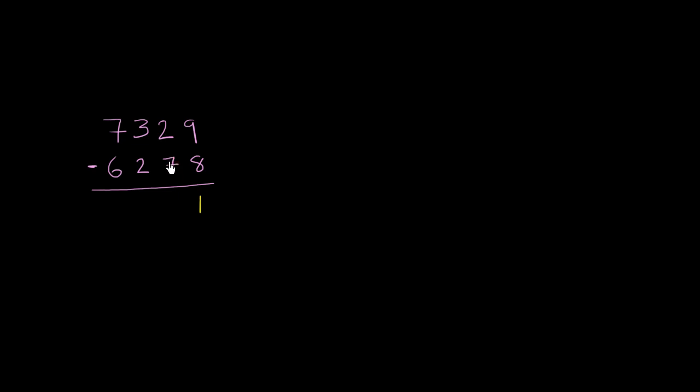Then we go to the tens place. And we're trying to subtract a 7 from a 2. And this is really representing a 70. And this is really representing a 20. Now we're hitting a bit of a stumbling block. So we're going to have to regroup or borrow.